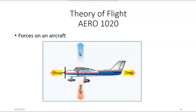The four forces acting on an aircraft in flight are lift, which is opposed by weight or gravity, and thrust, which is opposed by drag. When lift equals weight and thrust equals drag, the airplane is in straight and level unaccelerated flight. When lift is greater than weight, the airplane is climbing. When lift is less than weight, the airplane is descending. When thrust is greater than drag, the airplane is accelerating or speeding up. When thrust is less than drag, the airplane will be decelerating or slowing down.